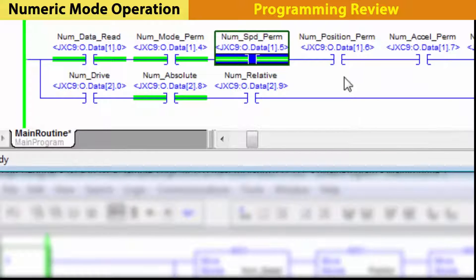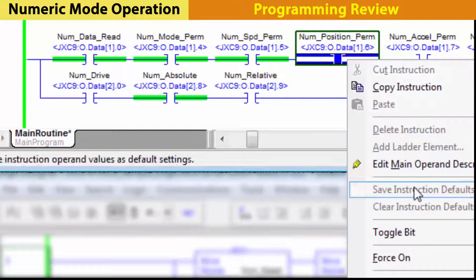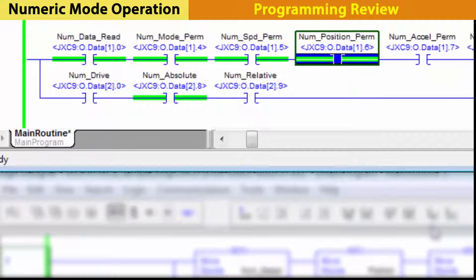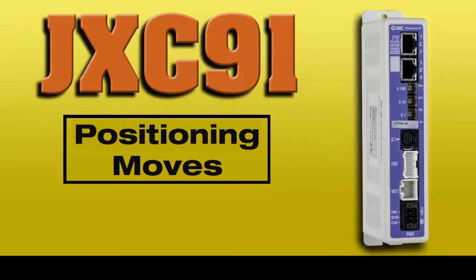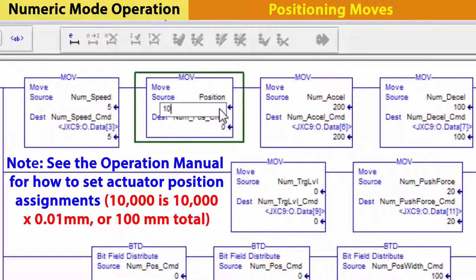Then, other variables like speed or position can be sent to the controller. Let's run with a speed of 5 and a position of 10,000.